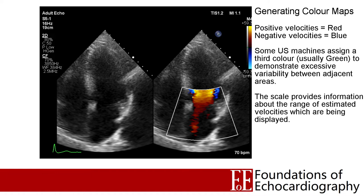Here we are back in our apical 4 chamber view with two images side by side — the plain 2D image on the left and an identical image with a colour box overlaid on the right. From the ECG the image is frozen at mid-diastole, towards the tail end of early diastolic filling. We can see a band of dark red becoming bright yellow blood leaving the left atrium and entering the LV. From the scale on the right-hand side, the ultrasound machine is estimating this blood is travelling in the order of about 50 cm per second as it crosses past the mitral valve annulus.